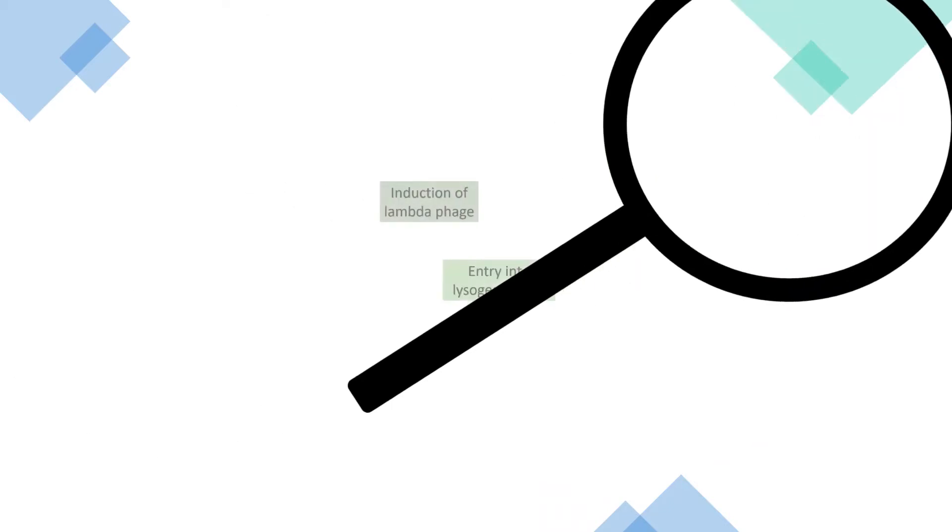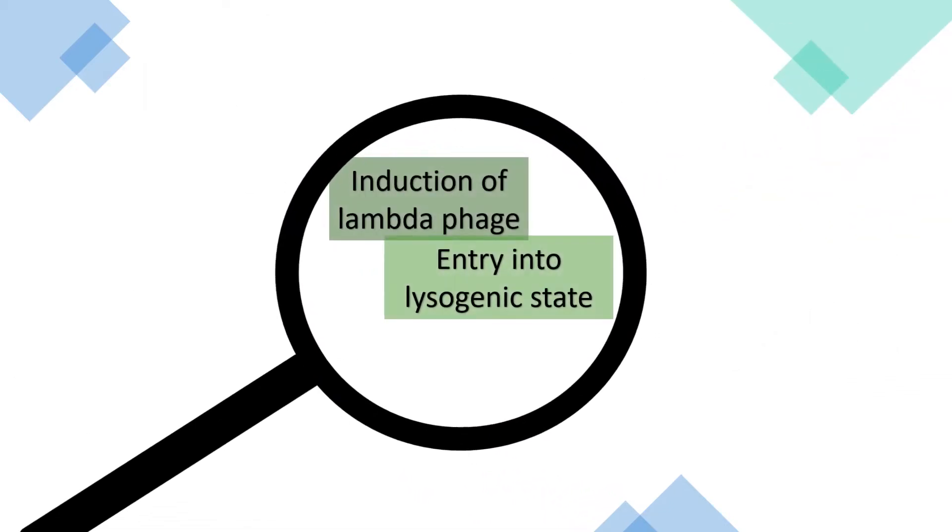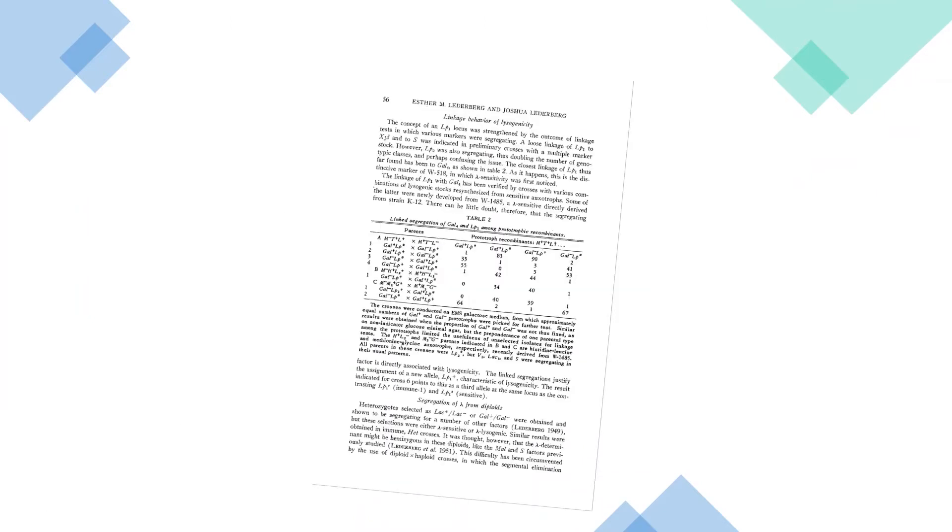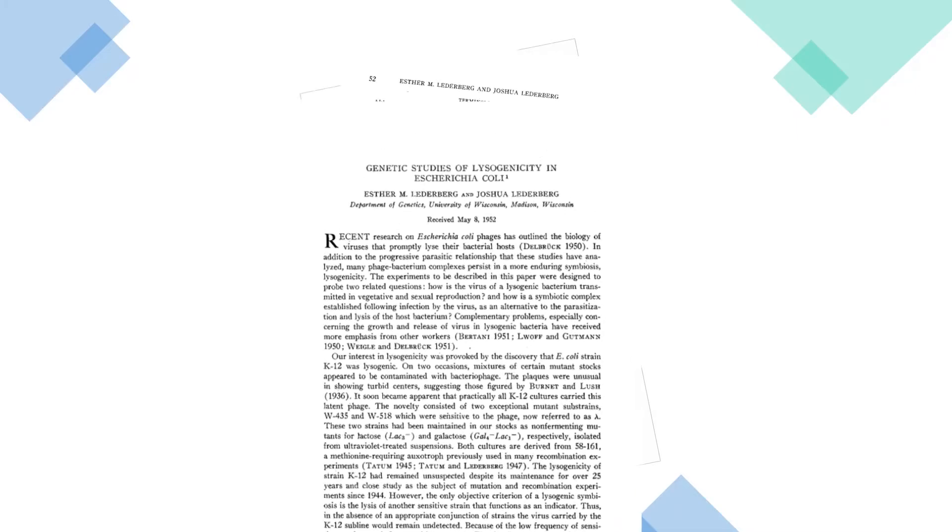Esther and her partner Joshua Lederberg investigated how the lambda phage could be activated in bacterial conjugation experiments and identified the triggers for phages entering the lysogenic state. Their work culminated in a 1952 paper, Genetic Studies of Lysogenicity in Escherichia coli. For Lederberg and Lederberg, lysogeny was a biological mystery, but 70 years of research has seen scientists nut out many of the basic details.